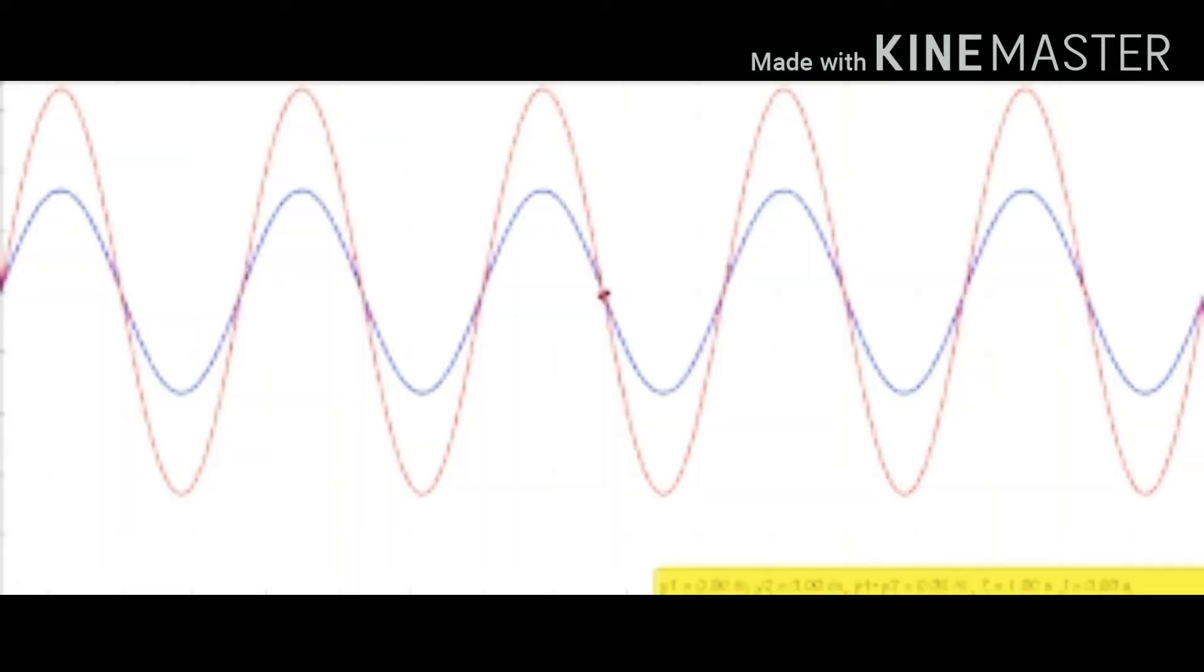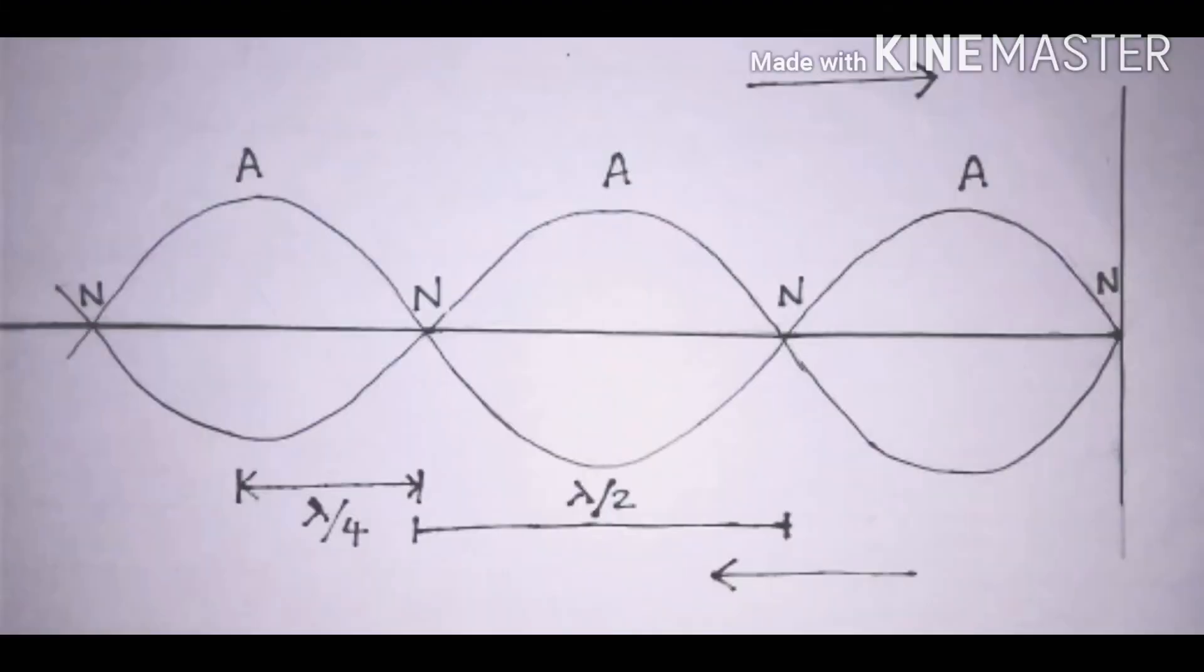What are nodes? Nodes are positions at which the vibration of the particle is with minimum amplitude. That is, displacement is minimum or you can say zero. Those points are called nodes.